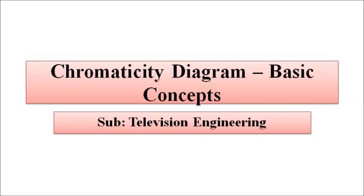Hello friends, welcome to Engineering Tutorial. We'll continue our discussion with television engineering. So far in the previous videos we have discussed about the various characteristics of color such as hue, saturation, luminance — HSL — and also the tristimulus values, trichromatic coefficients, and color triangle. In this video we are going to discuss about another important aspect which is the chromaticity diagram.